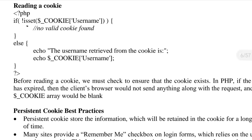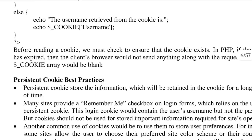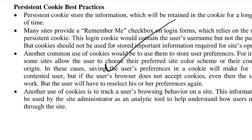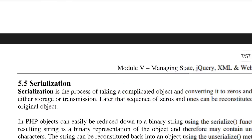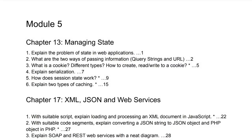For reading a cookie: if the cookie is set, you perform a certain action; if it is not set, you display a message. Otherwise, the cookie is retrieved from memory and the username associated with it is displayed. Some best practices are also given on how to persist the cookie.